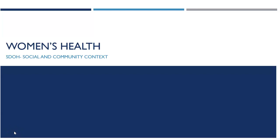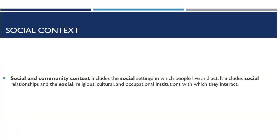Welcome to unit 3 where we look at the social determinants of health — social and community context. This presentation is going to introduce you to that social determinant of health. Social and community context means addressing all the social settings in which you live and act: the social relationships you have in society, religious experiences, cultural or ethnic experiences, and occupational institutions and the interactions you have with those people.